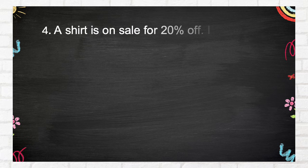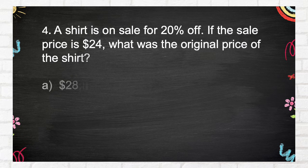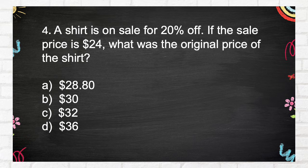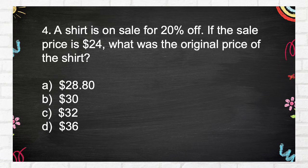Number 4. A shirt is on sale for 20% off. If the sale price is $24, what was the original price of the shirt? A. $28.80. B. $30. C. $32. D. $36.